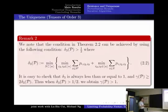We note that the condition in Theorem 2.2 can be achieved by using the following condition: delta 3 of P larger than 1 over 2, where delta 3 is defined in this way. It is easy to check that delta 3 is always less than or equal to 1, and thus when delta 3 of P is larger than 1/2, we obtain gamma P larger than 1.